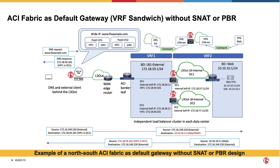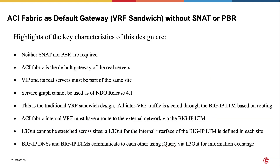Instead of making BigIP-LTM the default gateway, the other design option is to make ACI-Fabric the default gateway of the real servers and insert BigIP-LTM inline in the data path by using another Layer 3 for the BigIP-LTM internal interface. This design option is usually referred to as VRF sandwich. Since BigIP-LTM is in the traffic path based on routing, both directions of traffic will flow through the same BigIP-LTM, and hence neither SNAT nor PBR are required.